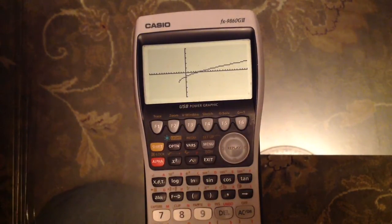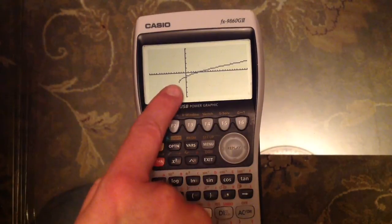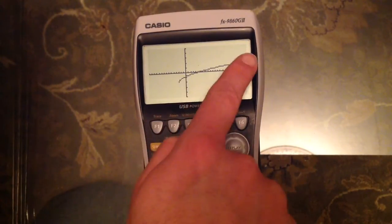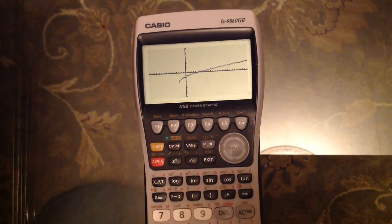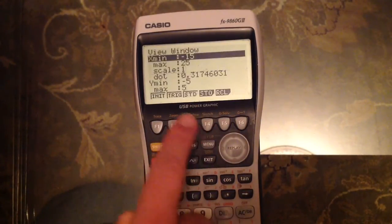But as we know with parametric graphs of this type, there should be a part coming down here. It's only drawing half of the graph, essentially. And this is something that's in the view window that we haven't seen before. And that's Shift View Window.